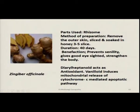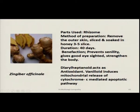Zingiber officinale — ginger — uses the rhizome. The outer skin is removed and the slices are soaked in honey; 3 to 5 slices per day are taken for a regimen of 40 days. This prevents senility, gives good eyesight, and strengthens the body. The diarylheptanoid present in ginger acts as an antioxidant. The vanilloid present induces mitochondrial release of cytochrome C in a mediated apoptotic pathway.